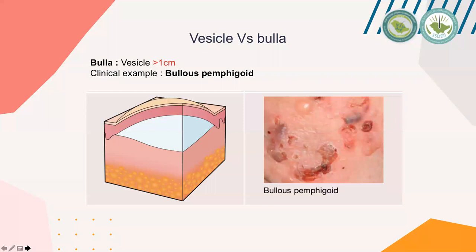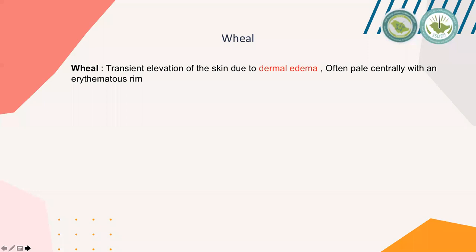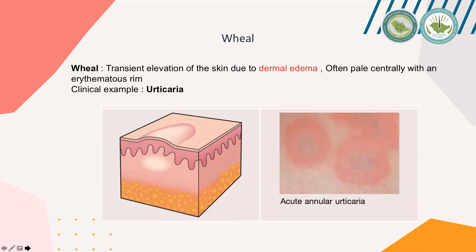Now we'll move to wheal. A wheal is a transient elevation of the skin caused by the presence of fluid in the dermal layer. A clinical example is acute annular urticaria, which is usually pale in the center and surrounded by an erythematous rim.